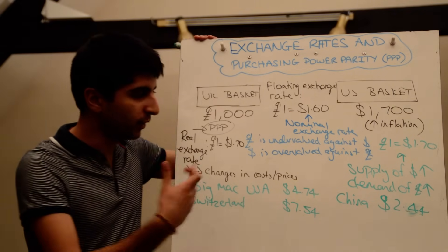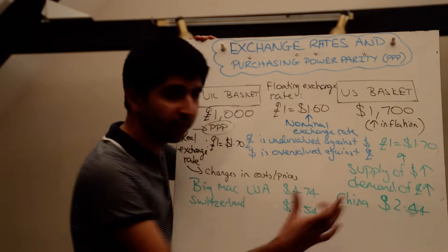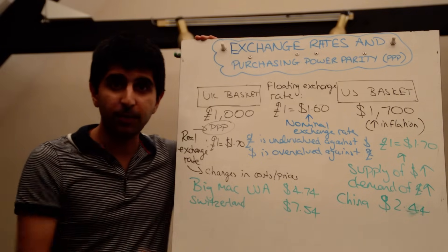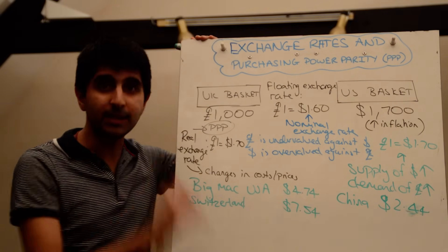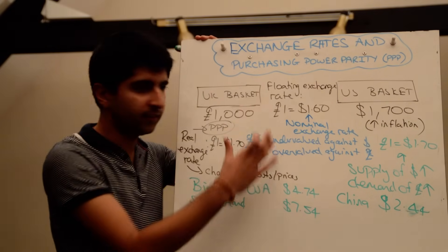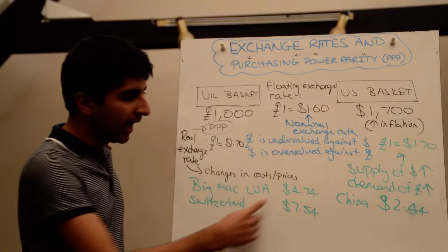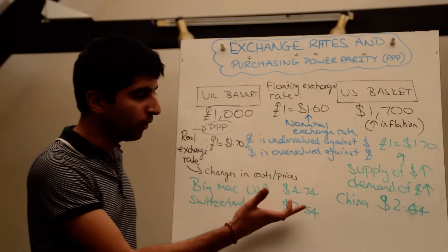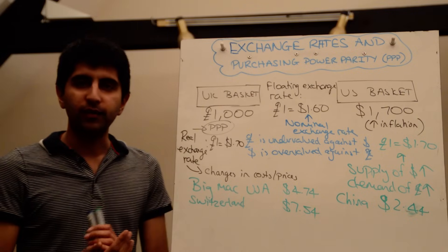If a US consumer goes to China and converts their currency into yuan, they'll be able to buy far more Big Macs. So the Chinese currency is undervalued and the Swiss franc is overvalued. In theory, there will be pressure on the Chinese currency to appreciate back to purchasing power parity — reflecting $4.74 for a Big Mac — and the Swiss franc should depreciate. The Big Mac Index, instead of looking at a whole basket of goods and services, simply takes the Big Mac as the basket and looks at price differences when you convert currencies. If the values are not the same, we don't have purchasing power parity.